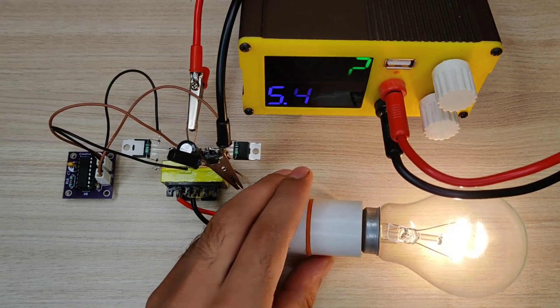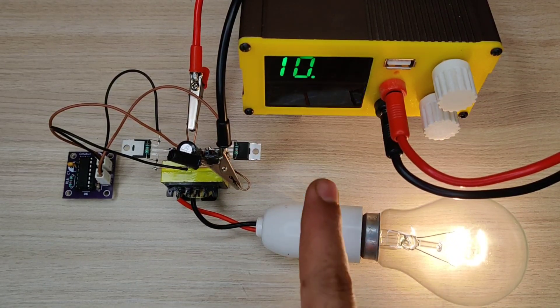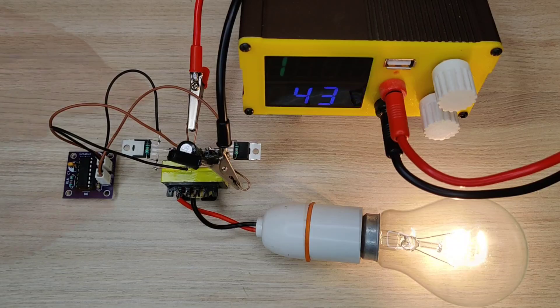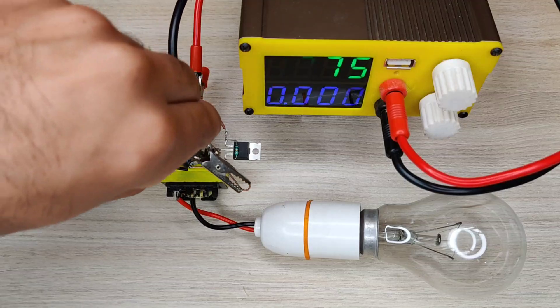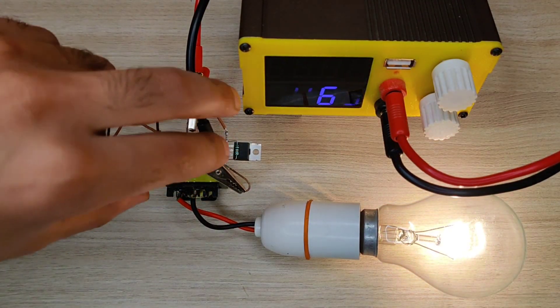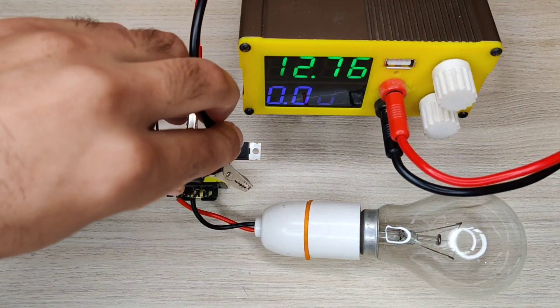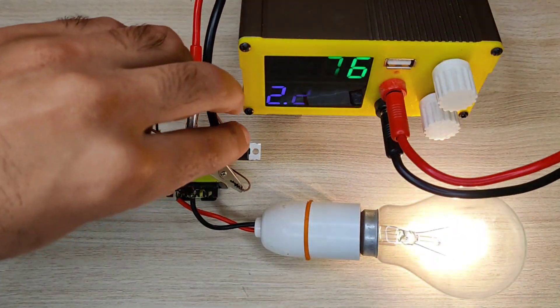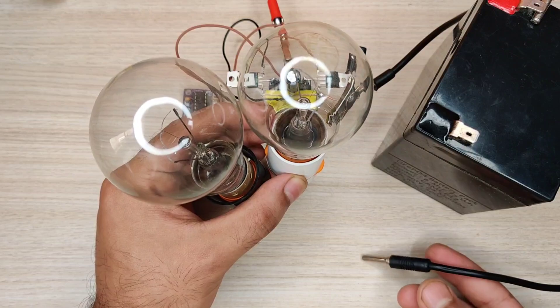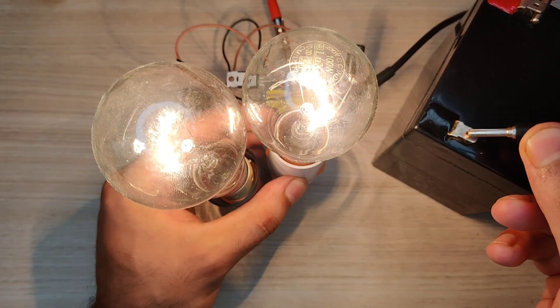As you can see, the lamp is glowing very bright and pulls 5.4 amperes of current. Now with more load, I tested with 12 volt battery and it is working awesome.